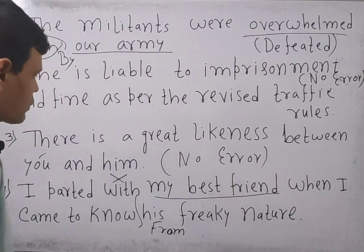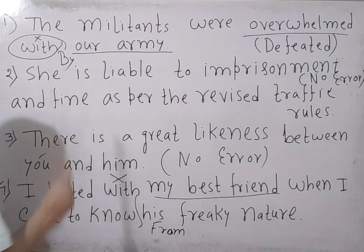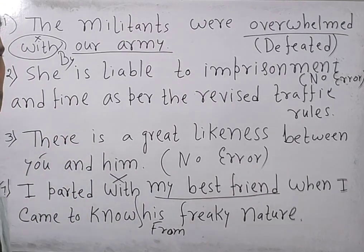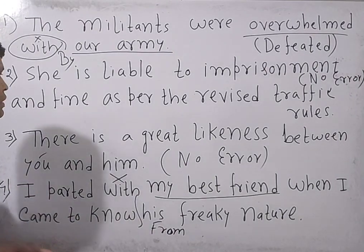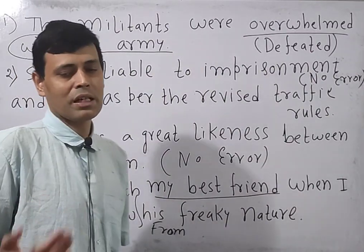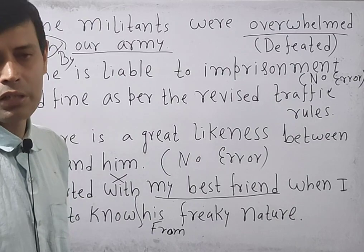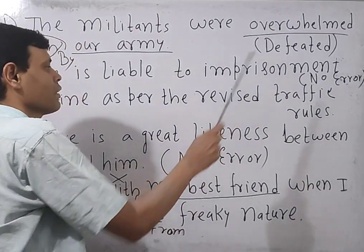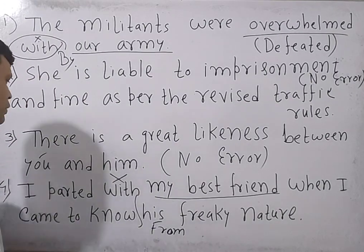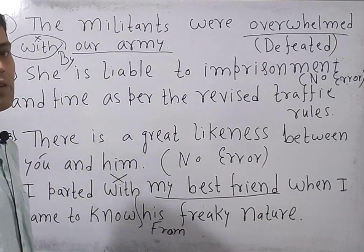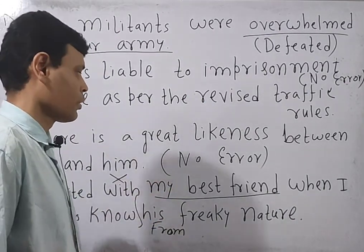Let's look through the overall class. The first sentence contains an error — it should be 'by' instead of 'with', because of the passive form. In question number two, 'she is liable to imprisonment' — here 'liable' suggests suitable or deserving, so it does not contain any mistake. In question three, 'there is a great likeness between you and him' — the sentence is devoid of any error, so you need to tick the no error option.